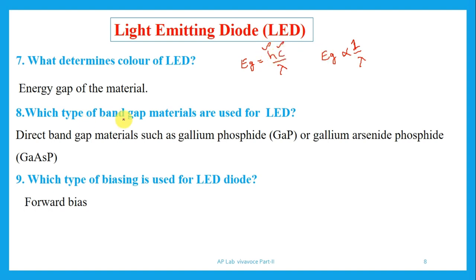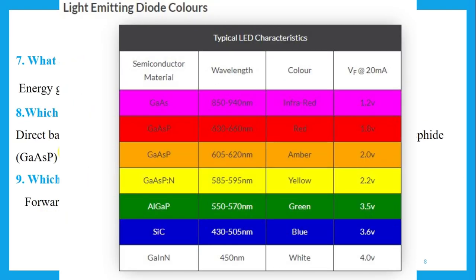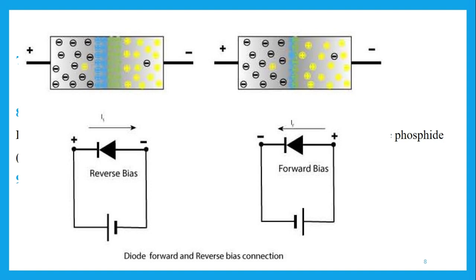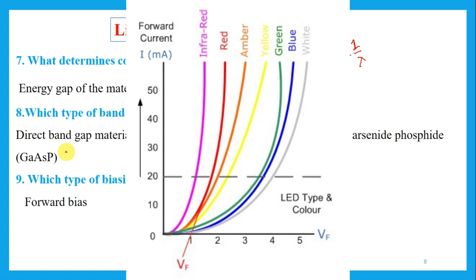Which type of band gap materials are used for LED? There are two types: direct band gap and indirect band gap. For making LEDs, we use direct band gap materials such as gallium phosphide and gallium arsenide phosphide. Which type of biasing is used for LED? Both LED and laser diode always use forward bias. Sometimes they may ask you to draw the forward bias on paper, so you must be familiar with the circuits — not only the theory but also drawing circuits and diagrams. That's all about the light emitting diode.